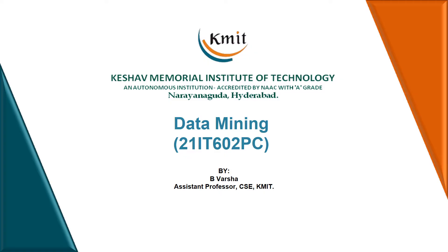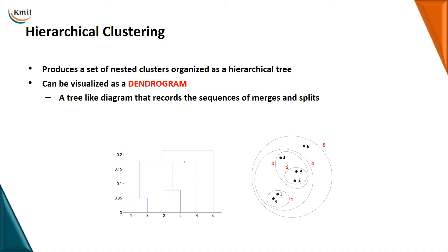In the same way, the hierarchical method groups the data into trees of clusters. That structure of tree is called a dendrogram. This dendrogram has a sequence of mergers. Hierarchical clustering produces a set of nested clusters organized as a hierarchical tree, which can be visualized as a dendrogram — a tree-like diagram that requires a sequence of mergers and splits.